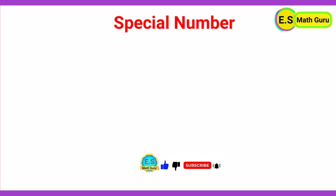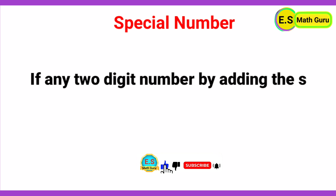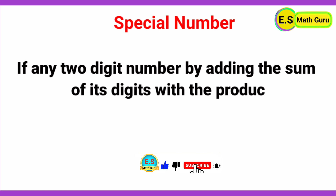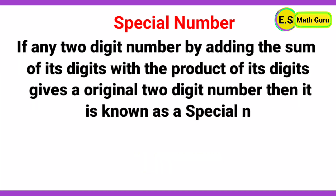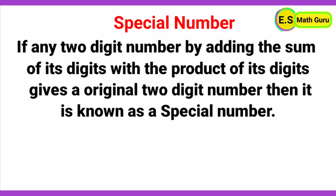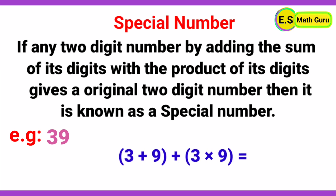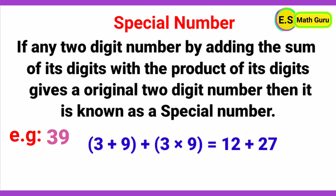Next, special number. If any two-digit number, by adding the sum of its digits with the product of its digits, gives the original two-digit number, then it is known as a special number. For example, 39: because 3 + 9 + 3 × 9 = 12 + 27 = 39. Therefore, 39 is a special number.